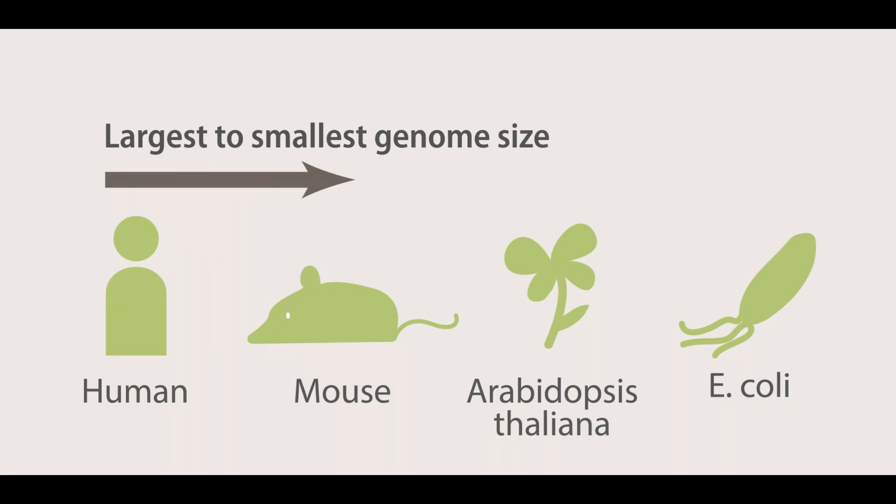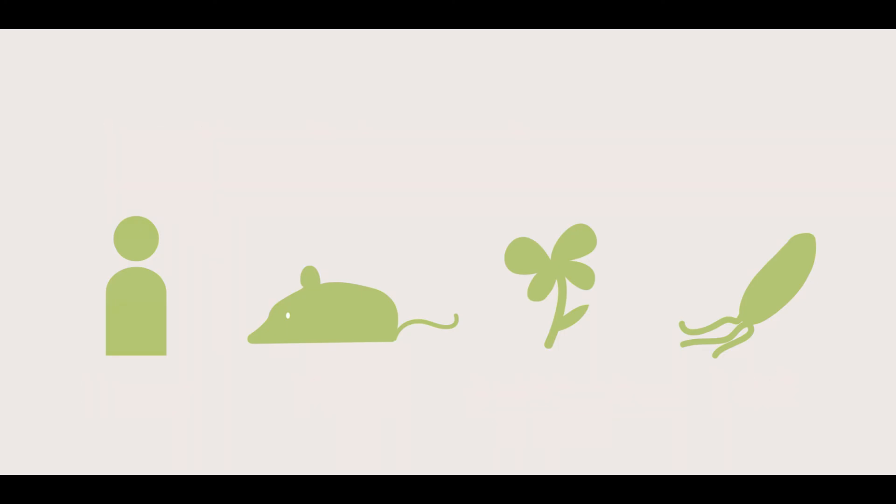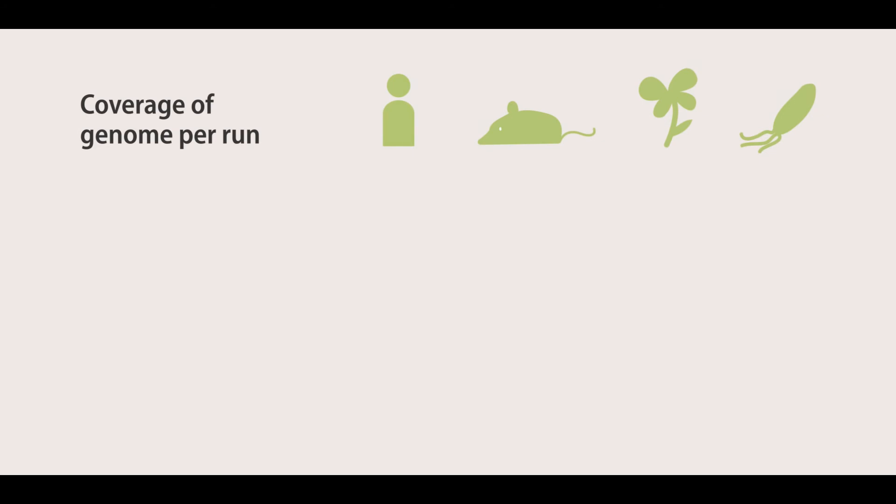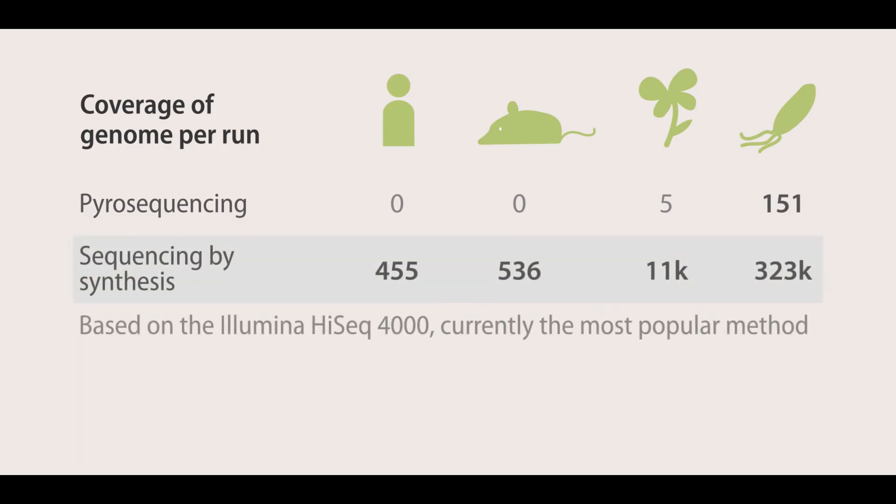For whole genome sequencing data to be useful, a minimum of 30x coverage is required. As it can be seen, the pyrosequencing method is only able to sequence the E. coli genome at enough coverage to result in valid data. The sequencing by synthesis method, which is the most popular method currently on the market, is able to generate hundreds of coverage per run.